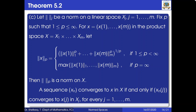Part C of Theorem 5.2. Let ‖·‖_j be a norm on a linear space X_j where j = 1, 2, …, M. Fix p such that 1 ≤ p ≤ ∞. For x = (x_1, …, x_M) in the product space X = X_1 × … × X_M, let ‖x‖_p = (‖x_1‖_1^p + … + ‖x_M‖_M^p)^{1/p} when 1 ≤ p < ∞, and ‖x‖_∞ = max{‖x_1‖_1, …, ‖x_M‖_M} when p = ∞. Then ‖·‖_p is a norm on X.